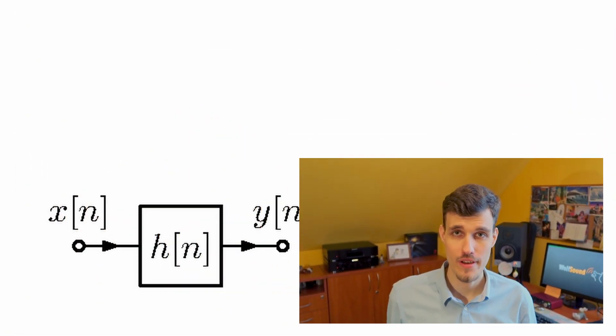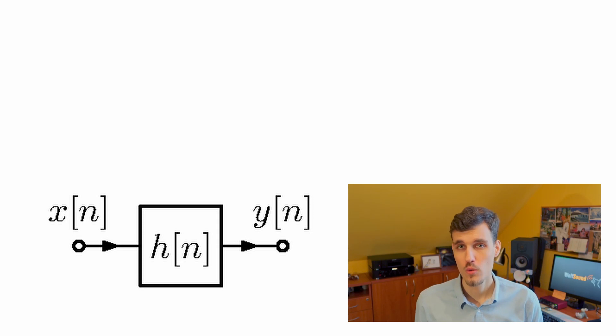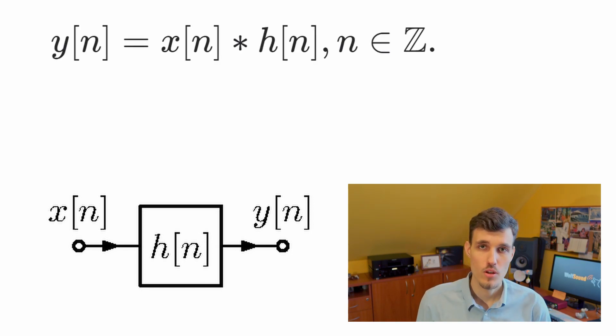Let's imagine that we have an LTI system with impulse response h and input signal x. The output of such a system will be y given by the convolution between x and h.